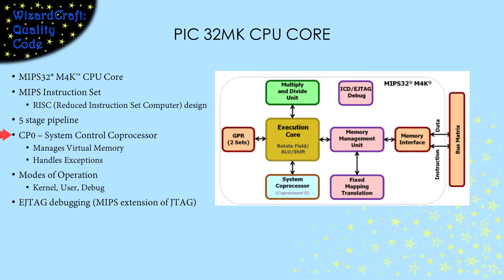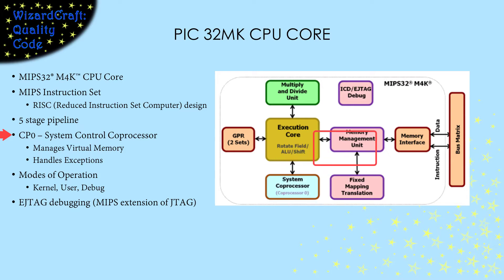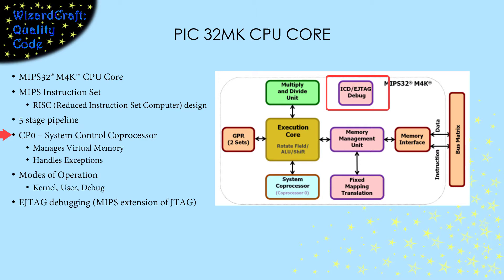In addition to the execution unit that does the CPU core's main processing, PIC CPU cores can also have coprocessors that offload specific kinds of operations. All PIC32 devices have a coprocessor 0, called CP0, that manages a virtual memory system and exception handling. The memory management unit provides access to the on-chip memory. When we need to, we can put the core into debug and attach an in-circuit debugger to use the JTAG debugging so that we can step through our code as it executes.